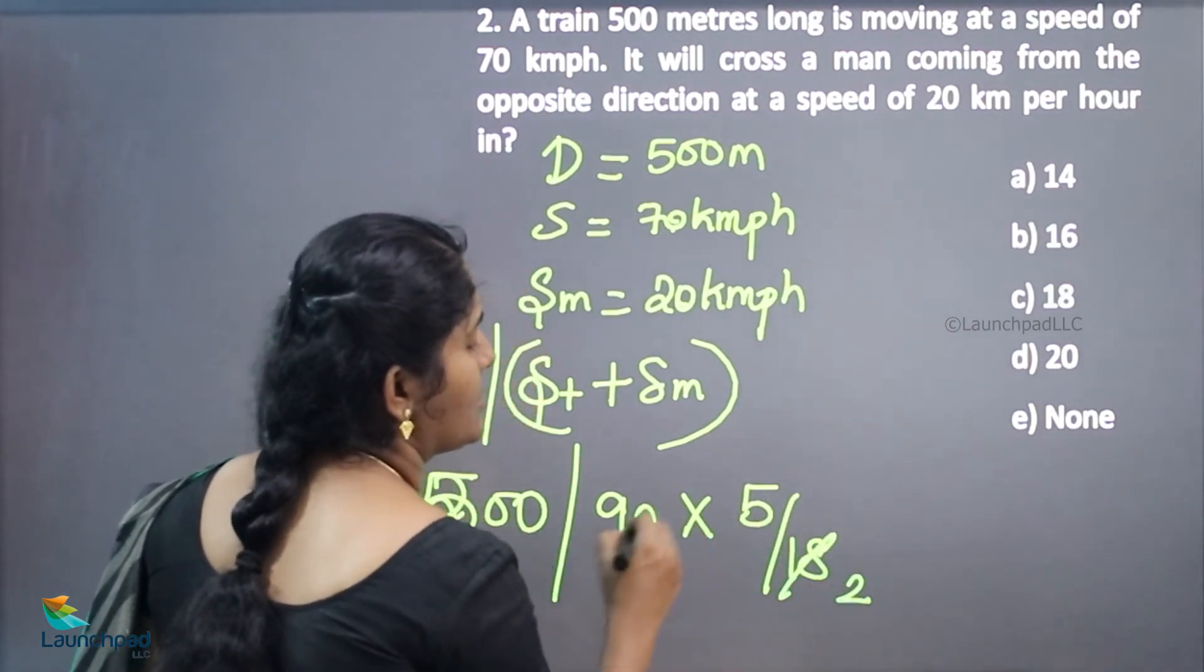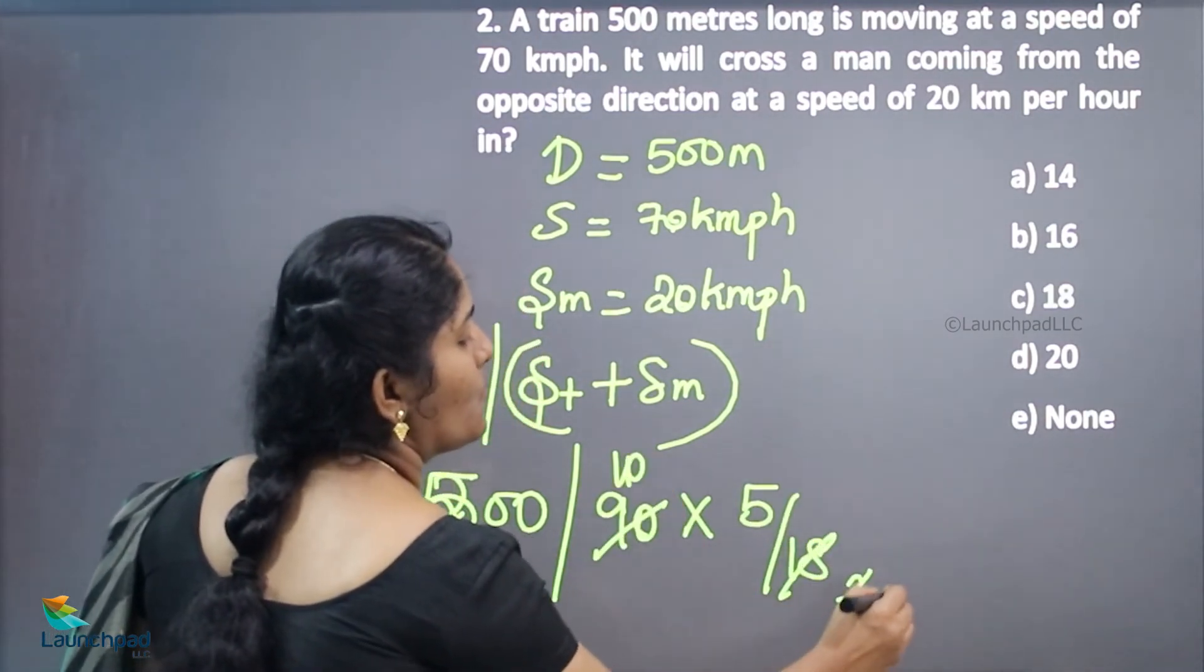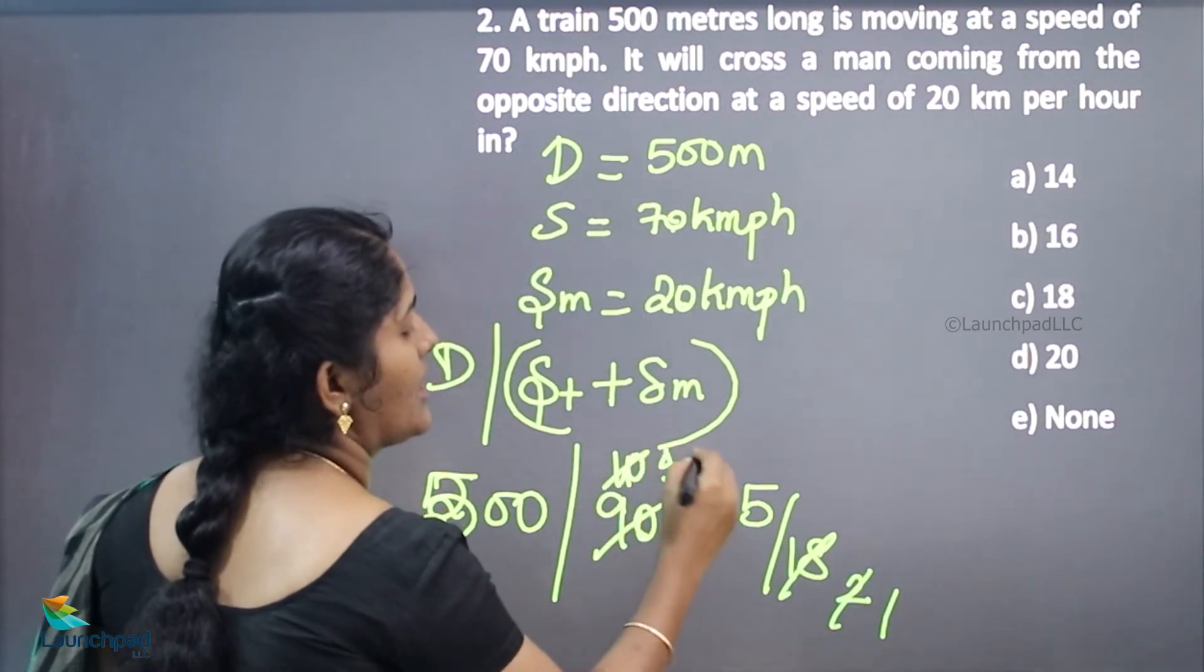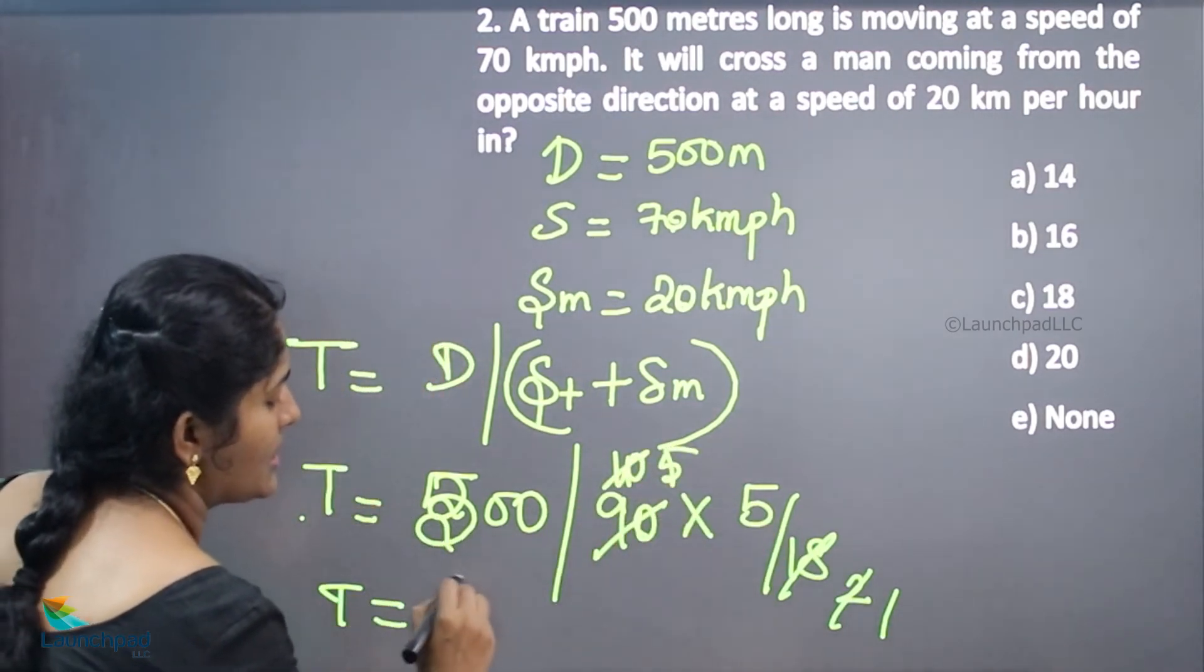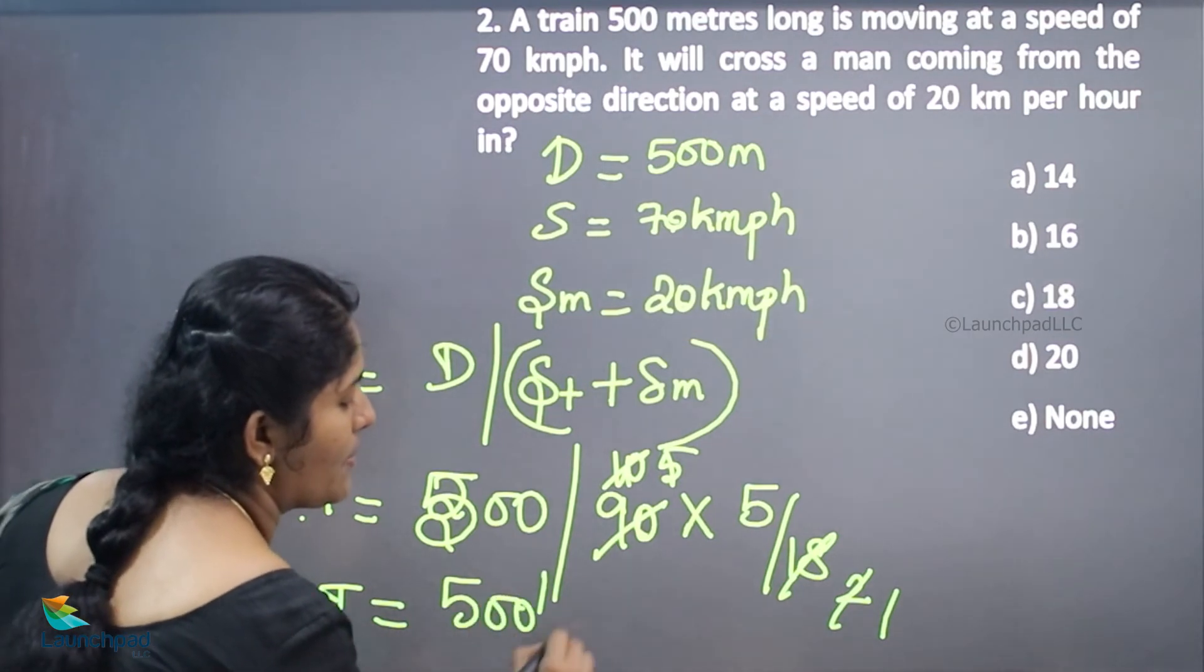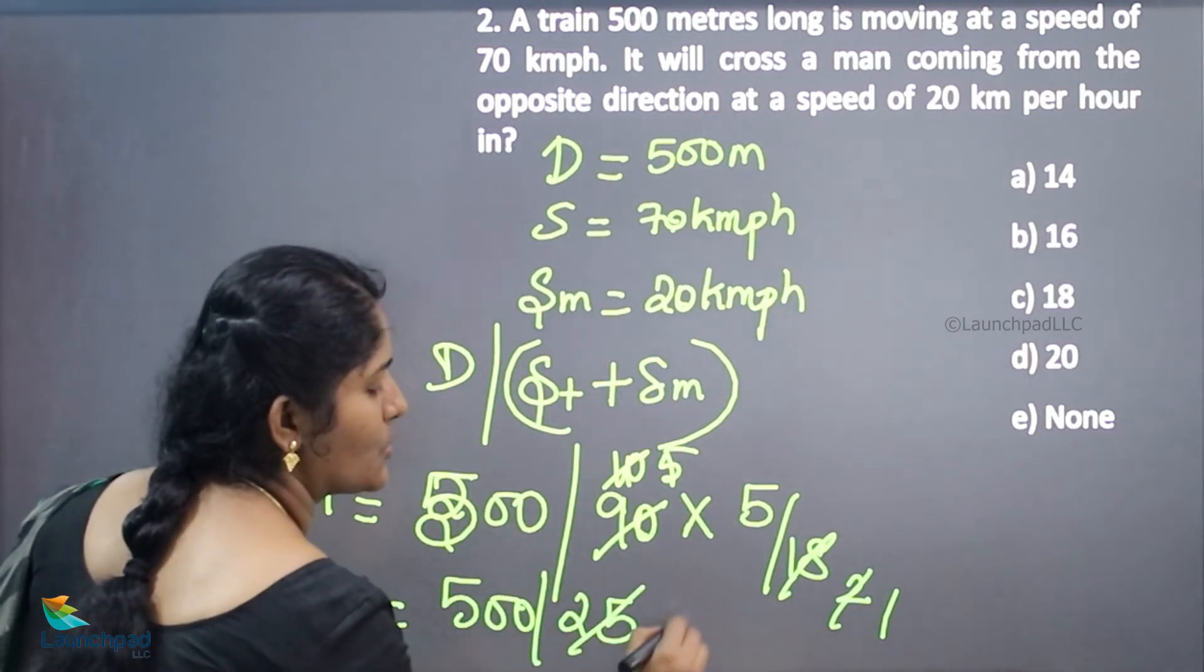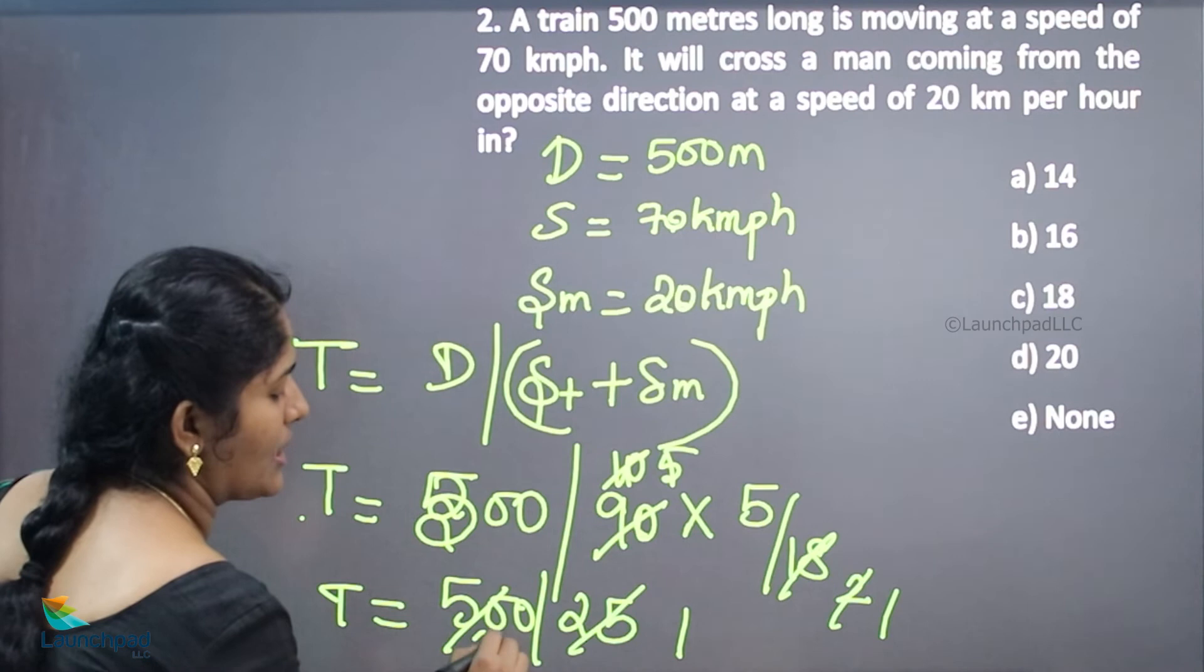Converting: this is 2 times, this is 10 times, this is 5 times. 5 times 5 is 25. Time equals 500 divided by 25. This is 1 time, this is 2 times.